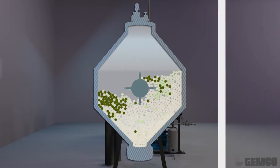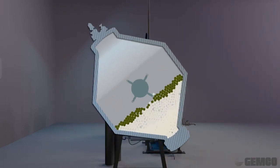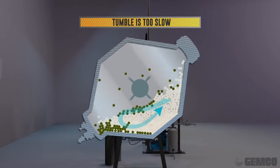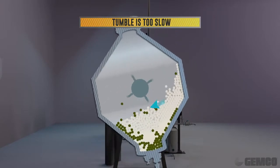Conversely, blending will not occur if the speed of the blender is too slow. In this case, the material will simply slip down the wall and not move into the center of the blender.